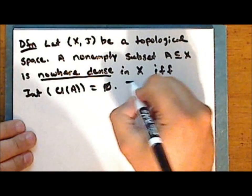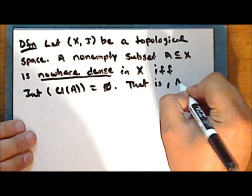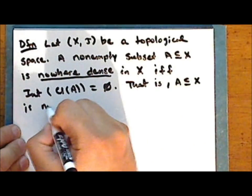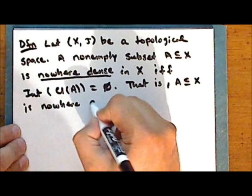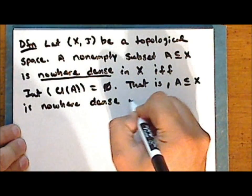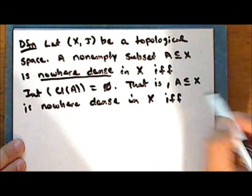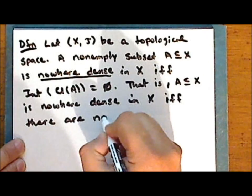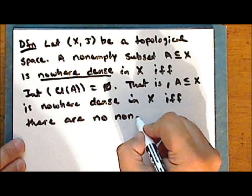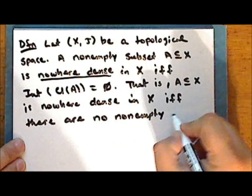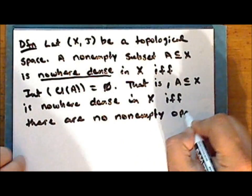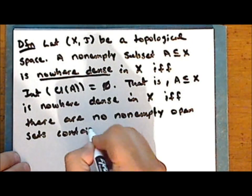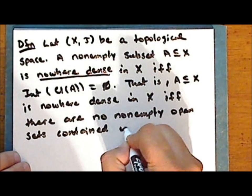That is, the non-empty subset A is nowhere dense in the space if and only if there are no non-empty open sets contained in its closure.